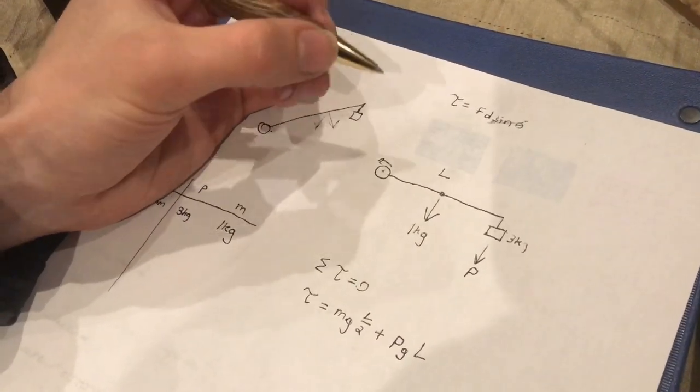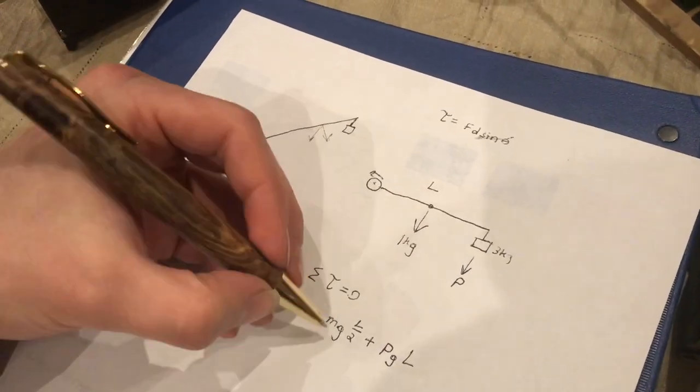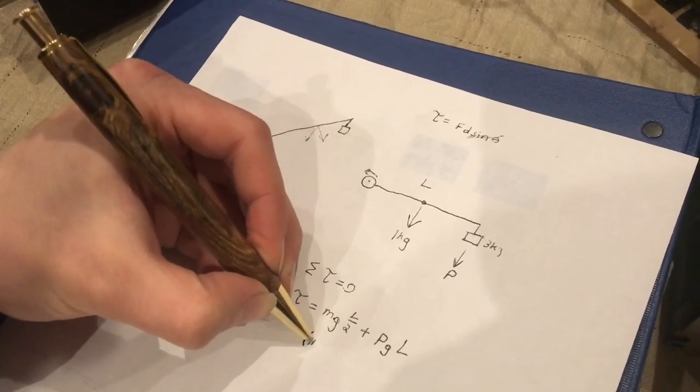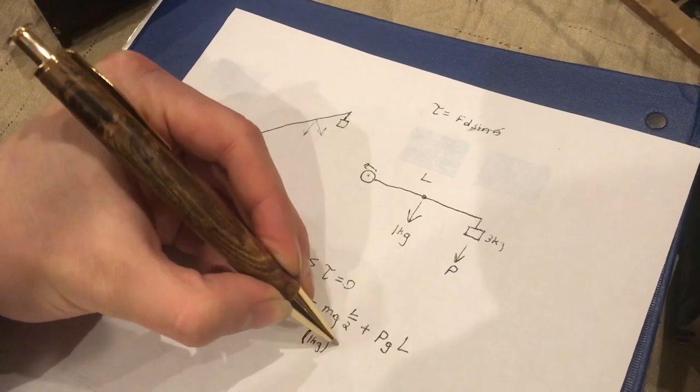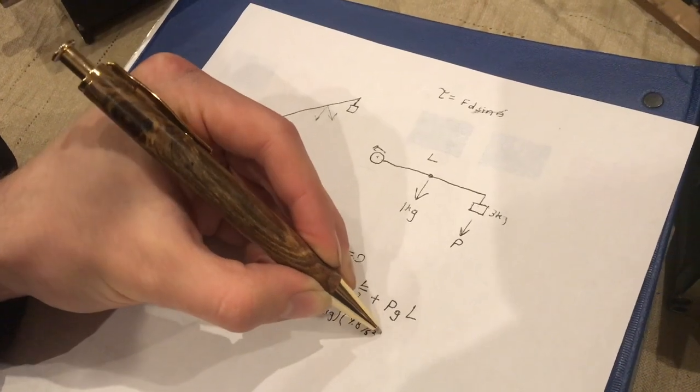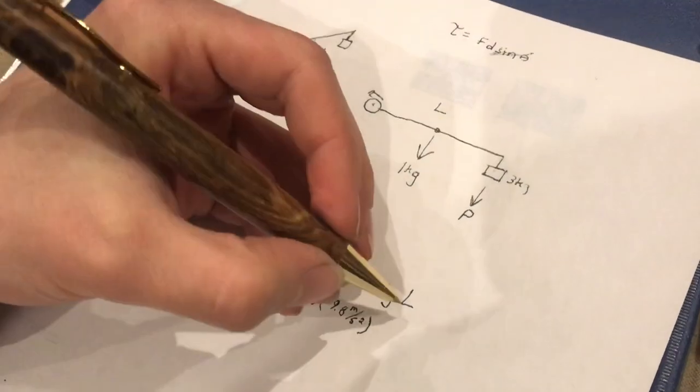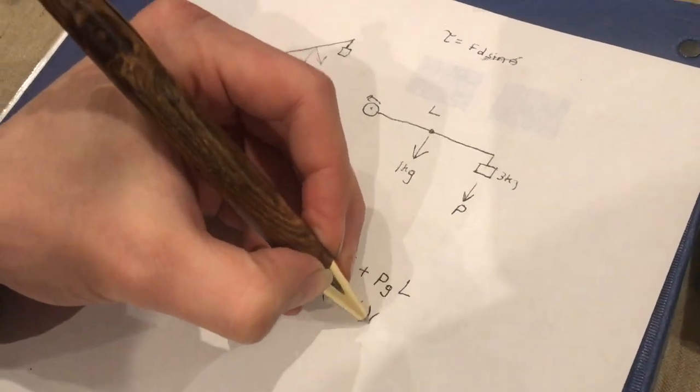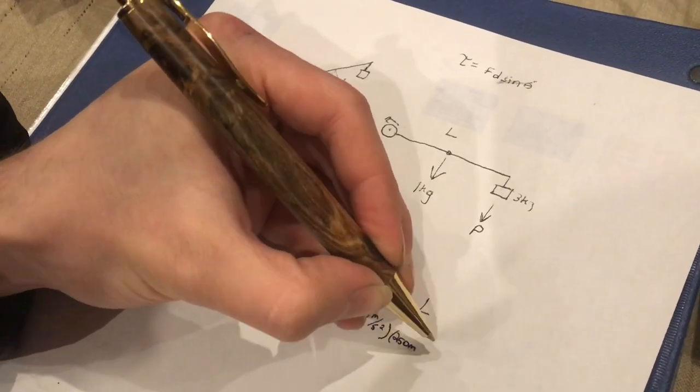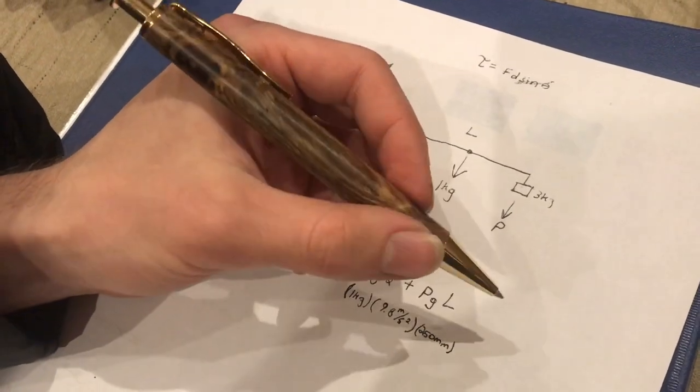So now, since we know these values, we can compute the torque. M is one kilogram times 9.8 meters per second squared times L over two. Did I give, yeah I did. L over two is going to be half of 500 or 250 millimeters, and here why don't we just make this 0.250 meters.